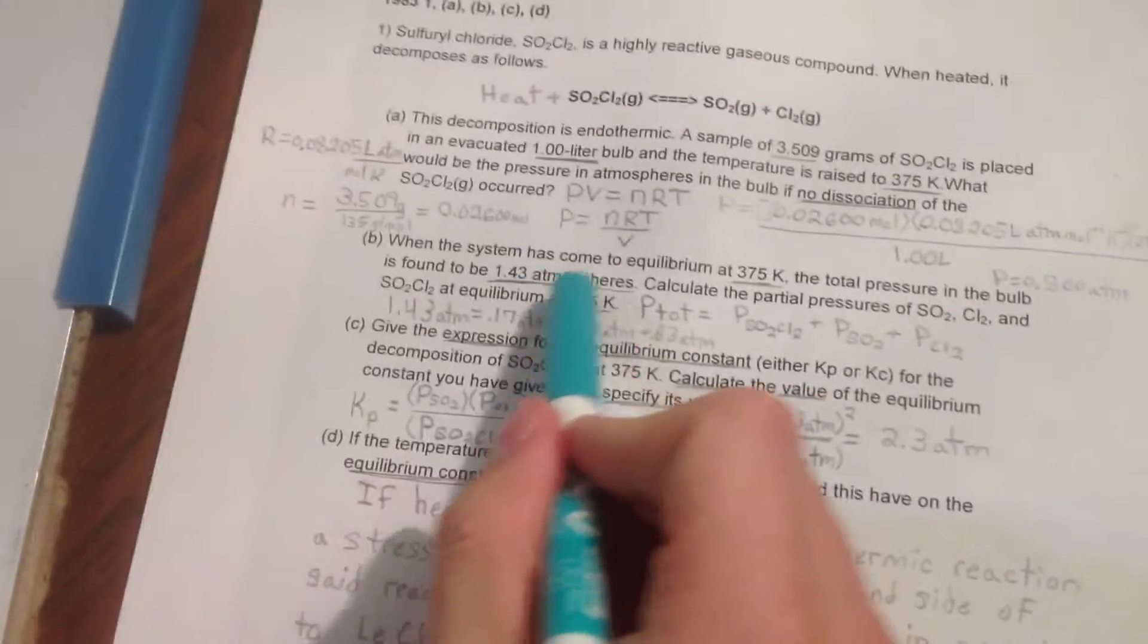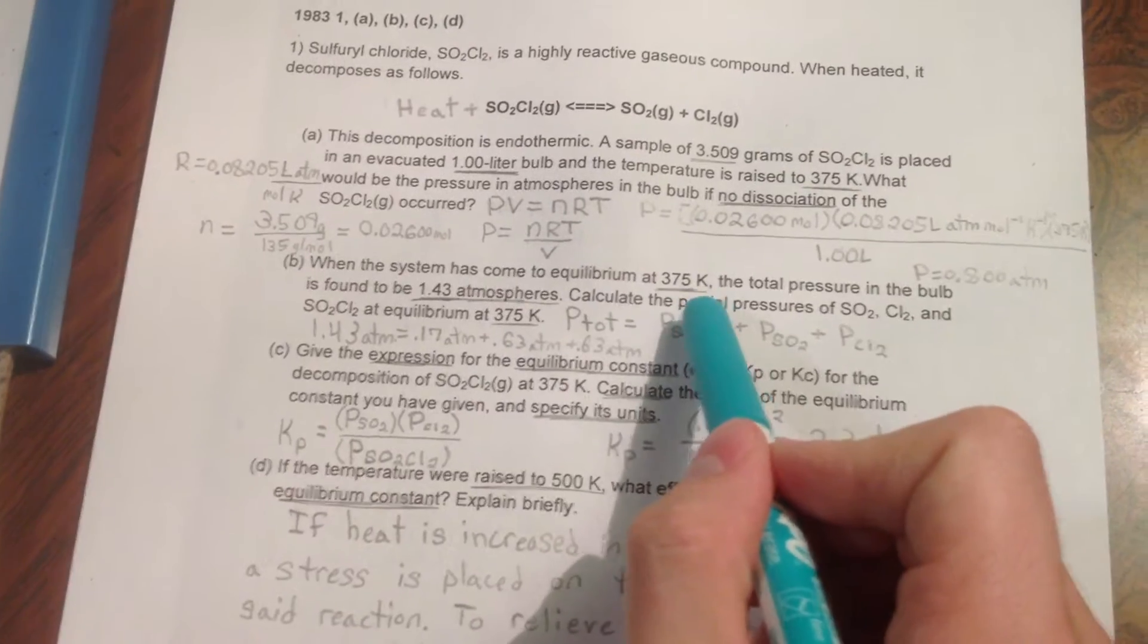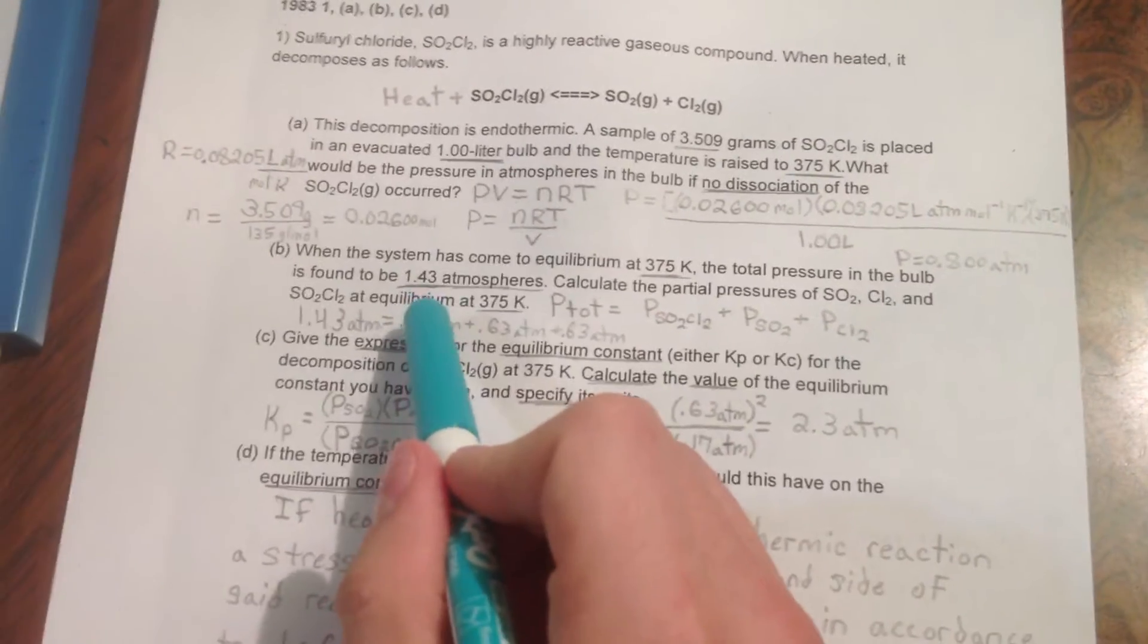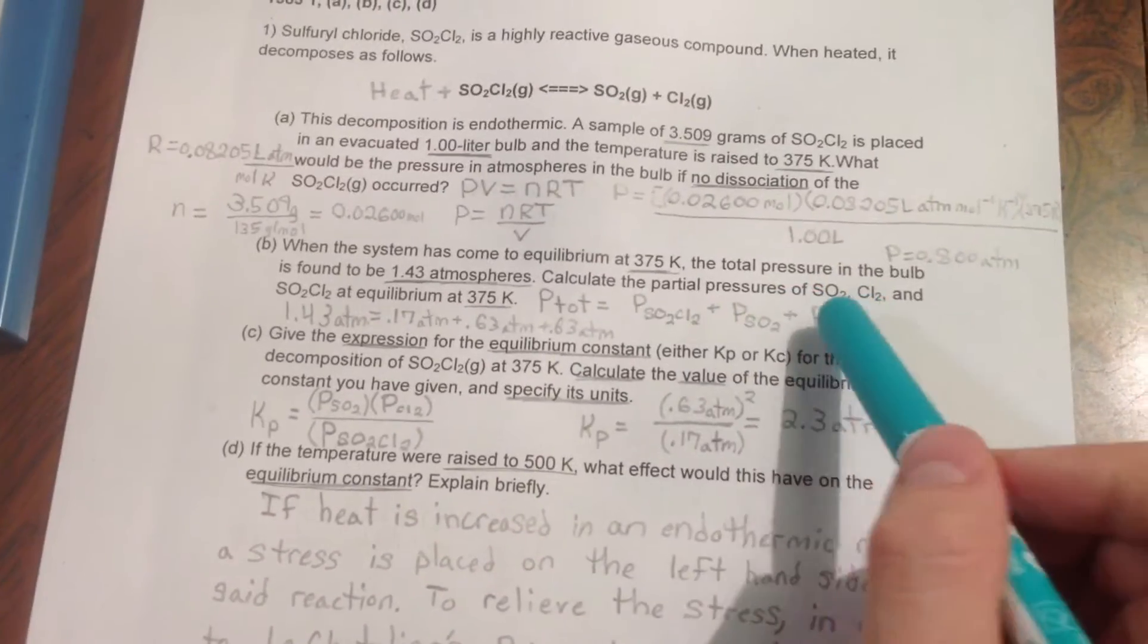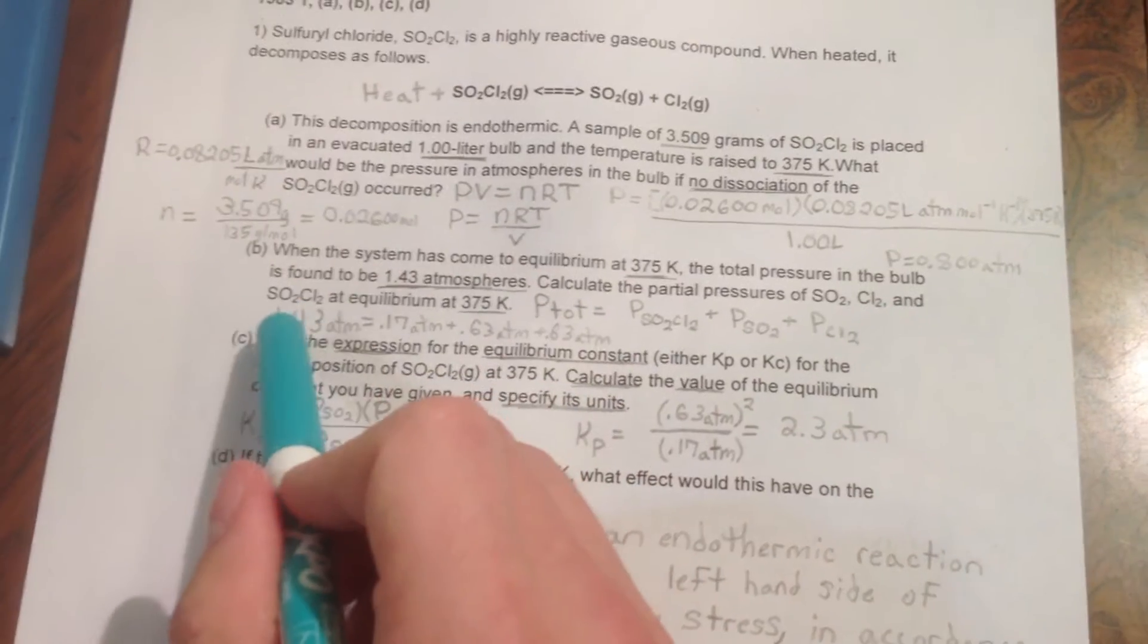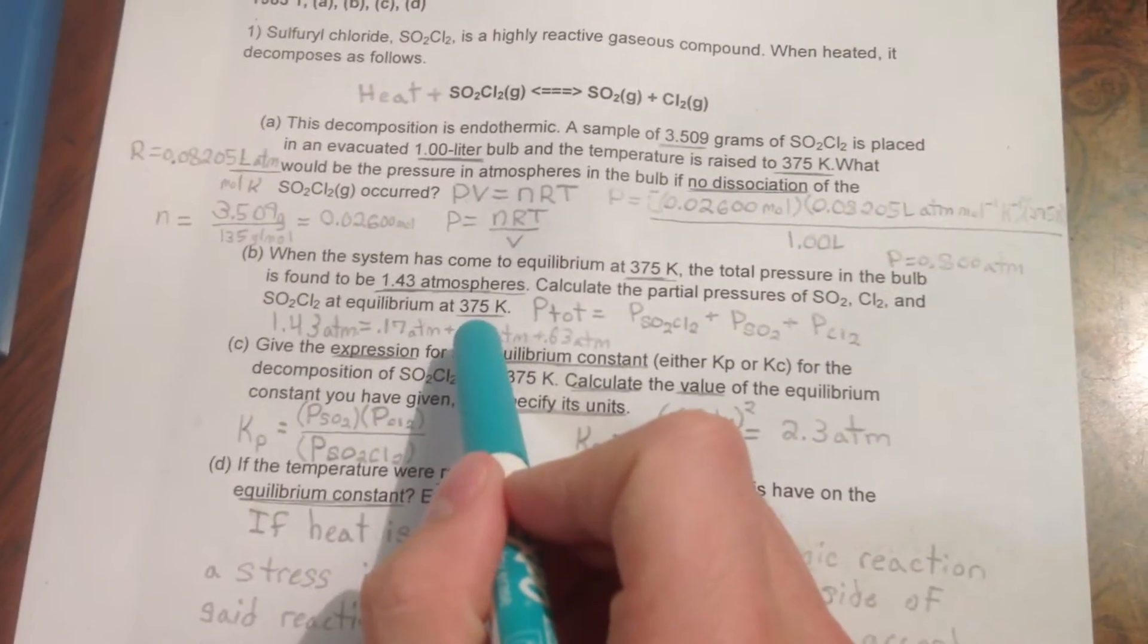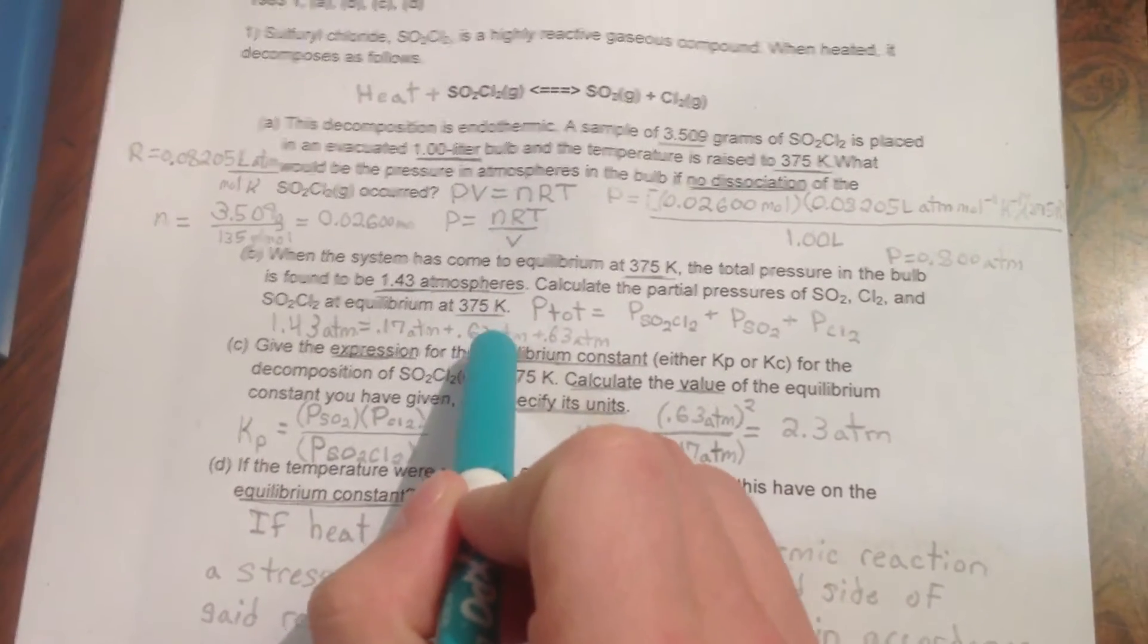Part B. When the system has come to equilibrium at 375 degrees Kelvin, the total pressure in the bulb is found to be 1.43 atmospheres. Calculate the partial pressures of SO2, Cl2, and SO2Cl2 at equilibrium at 375 degrees Kelvin.